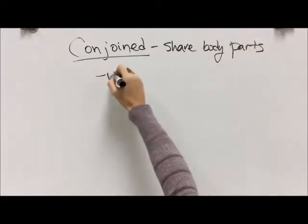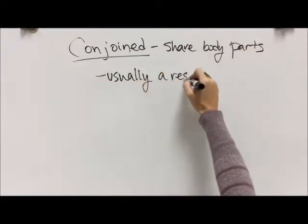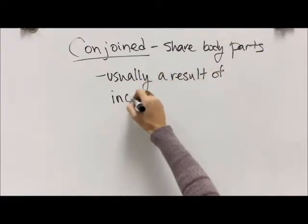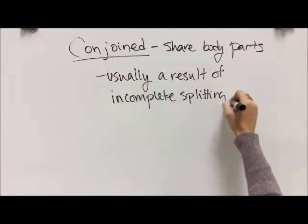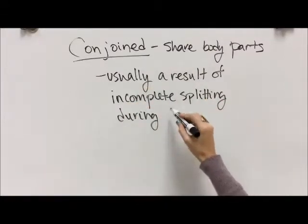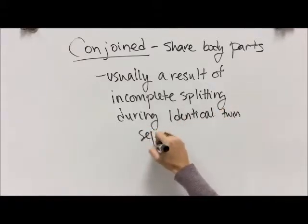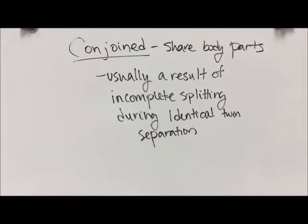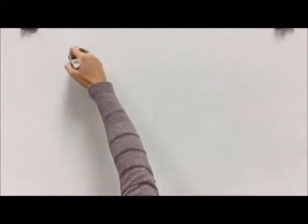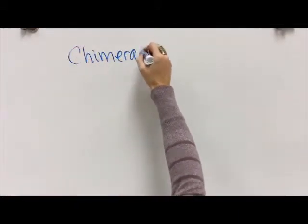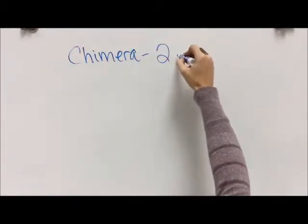Conjoined twins are a situation where the people share body parts. It's usually a result of incomplete splitting during the identical twin process after that zygote gets fertilized. They just don't get completely separated from each other, so the two people are kind of stuck together at all different parts or points in their body.